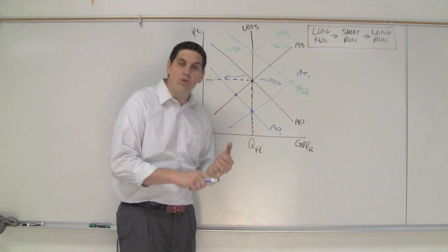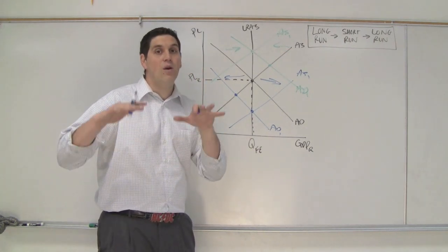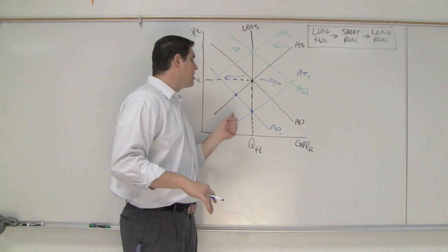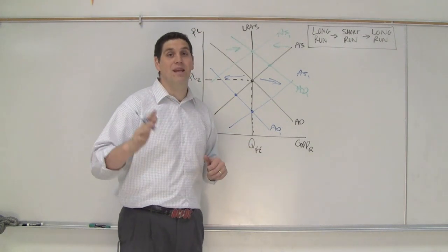In theory it makes sense but because of unions, because of contracts, because of all different sort of things that keep prices and wages from falling, that doesn't really allow aggregate supply to shift to the right. That's one of the key differences between classical economists and Keynesians.